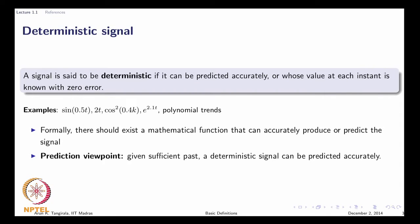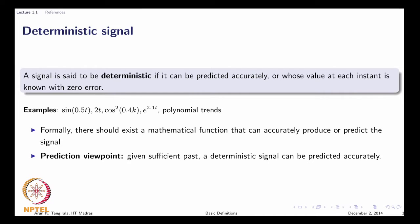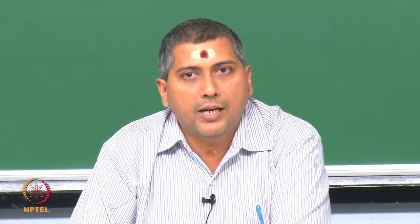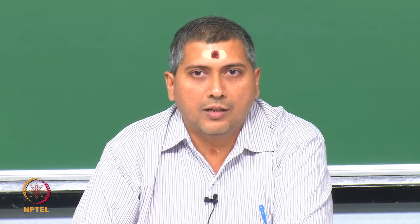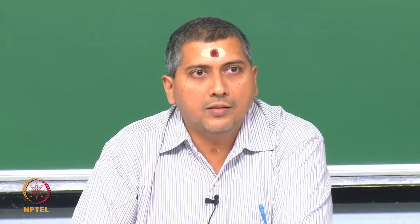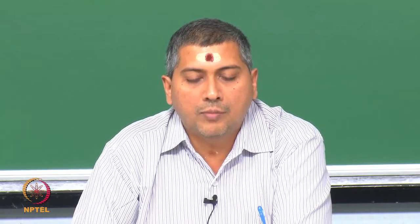Let us start with the concept of a deterministic signal. We all have an intuitive feeling of what a deterministic signal is. A signal is said to be deterministic if it can be predicted accurately — that is the prediction viewpoint. An alternative way of looking at it is that there exists a mathematical function that will predict the entire course of its evolution over its entire existence. Deterministic signals need not be periodic, though periodic signals serve as examples. The key word is accurate prediction.